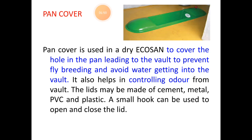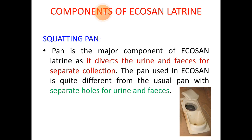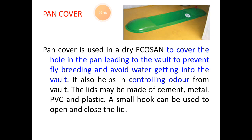The next part is the pan cover, which is used to cover the holes for urine and excreta collection. The cover is placed to prevent mainly fly breeding and to control the smell or odor. It is generally made of cement slabs, metals, or PVC or plastic, but with a hook used as a holder for opening and closing. You can see both holes open in one picture and both closed by the pan cover in another.